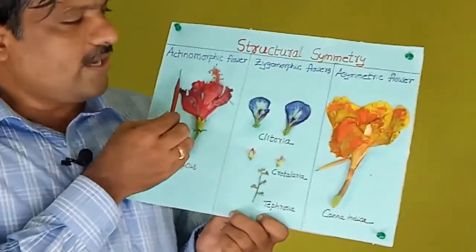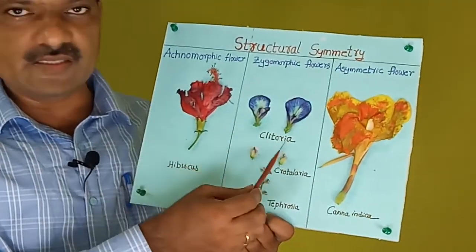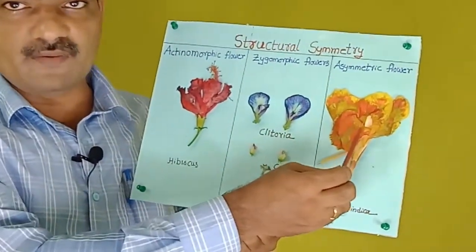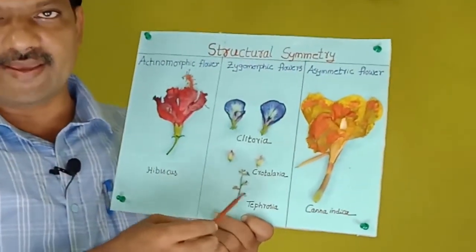Now look at this flower called Canna indica, which mostly grows along ponds and waste places. If you want to get two equal halves from this Canna indica flower, you will not get them because of the alignment of the floral parts — you will not get any two equal halves at any angle. That is called an asymmetric flower. Look at this chart: actinomorphic flowers give equal halves at any angle, and asymmetric flowers never give equal halves at any angle.